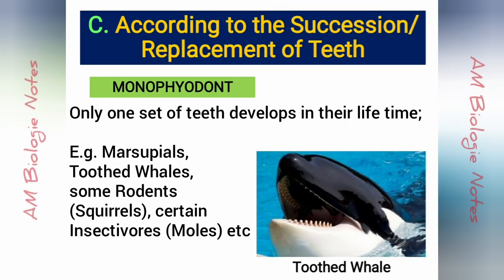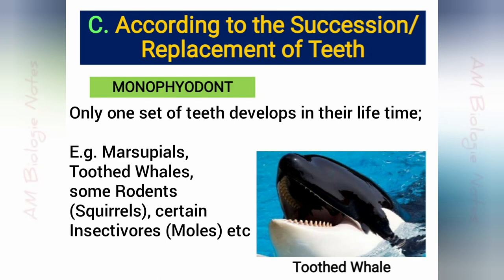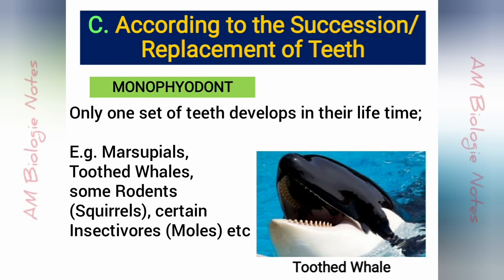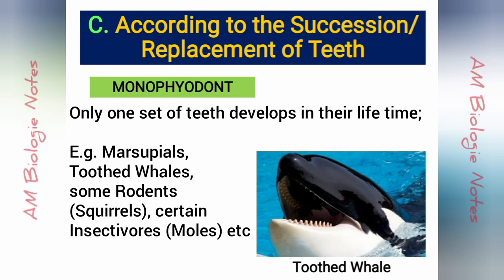Monophyodont: In some mammals, only one set of teeth develops in their lifetime, and this condition is called monophyodont. Examples include marsupials, which retain all their milk teeth except the last premolars, toothed whales, some rodents, certain insectivores, etc.